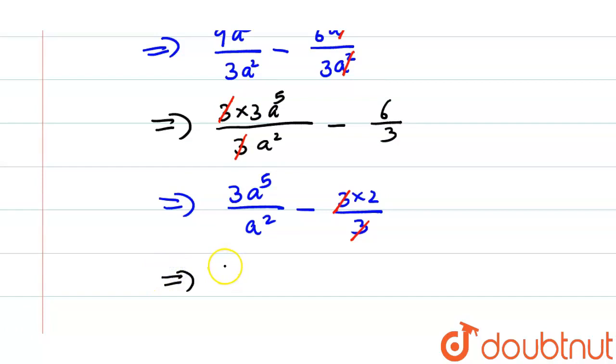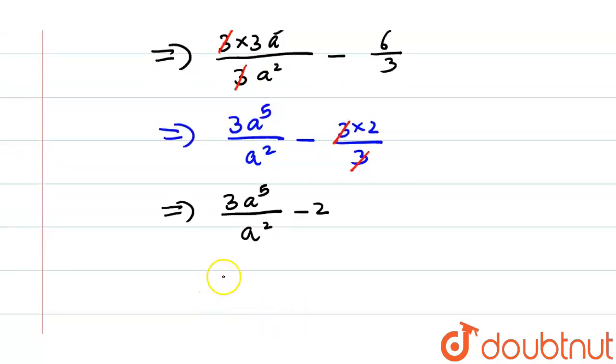This will be equal to 3a raise to 5 divided by a square minus 2. We know that according to the laws of exponents, a raise to m divided by a raise to n is equal to a raise to m minus n.